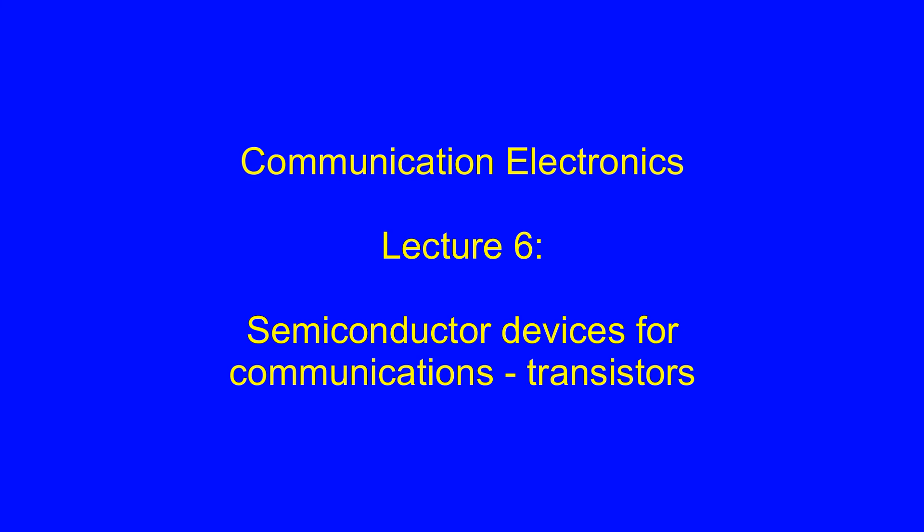Diodes themselves are also able to provide amplification, but they are only two-terminal devices. Just one single port is available, and it's very difficult to build a unidirectional amplifier using diodes. Bidirectional amplifiers are easy, but bidirectional amplifiers are also very unstable, so it's something highly undesirable. This week we are going to look at further development of semiconductors — transistors. Transistors evolved in the same way as vacuum tubes evolved from a single vacuum diode to a vacuum tube with a control grid that could provide unidirectional amplification. That is the purpose of transistors.